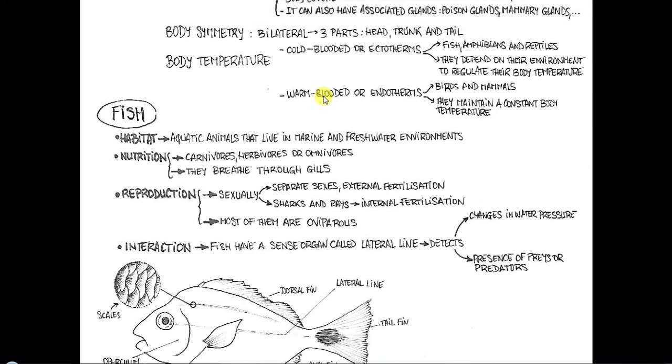Y vamos ya, sin más dilación, a profundizar en cada grupo. Fish. Habitat: Aquatic animals that live in marine and freshwater environments. Nutrition: Carnivores, herbivores or omnivores. They breathe through gills. Reproduction: Sexually, separate sexes, external fertilization. Sharks and rays, internal fertilization. Most of them are oviparous. Interaction: Fish have a sense organ called lateral line that detects changes in water pressure and the presence of preys or predators.